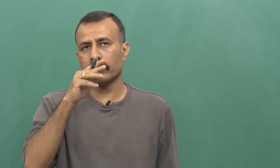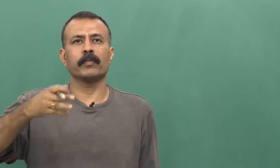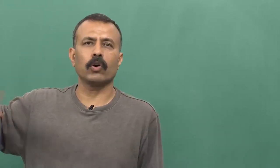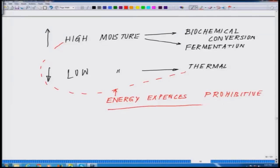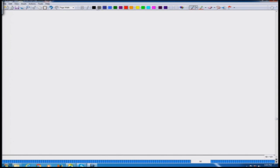In other words, you will have to spend a whole lot more energy in order to transform a high moisture sample by a thermal conversion route. When we cover all the classifications of different conversion routes it will become clearer, but for now you can visualize that if it has more water, you may prefer to go through a fermentation route where it converts into alcohol and so on.